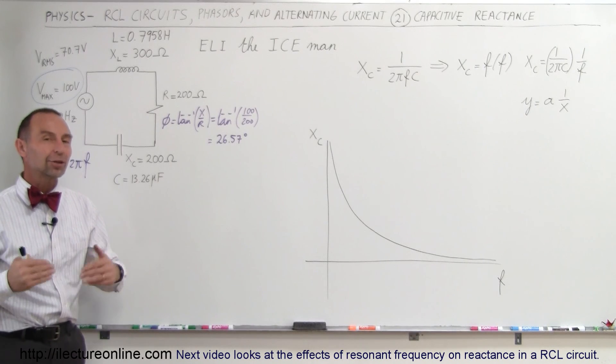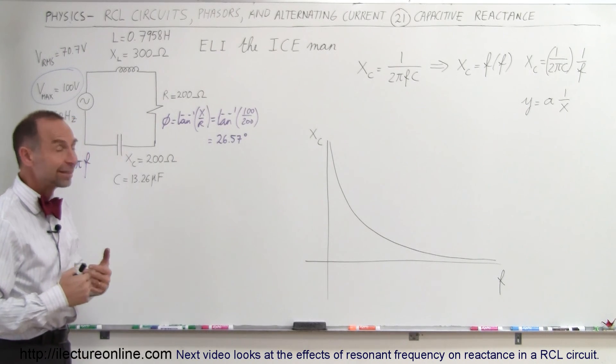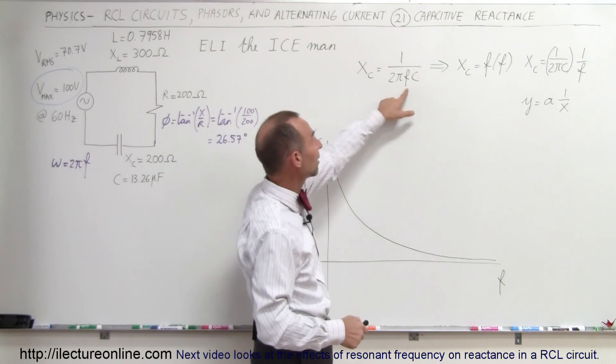Welcome to Electron Online. Now let's take a look at the capacitive reactance. To find the capacitive reactance, here's the equation: it's 1 over 2πfC.